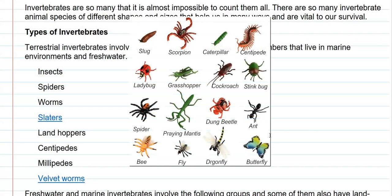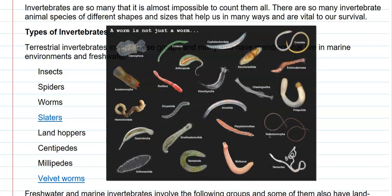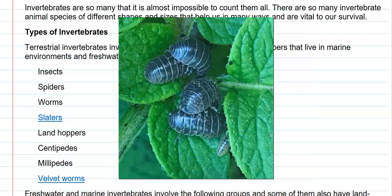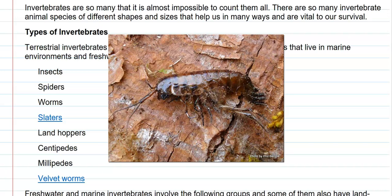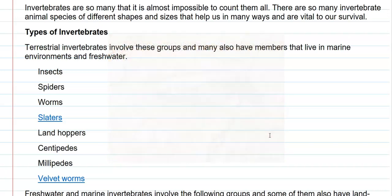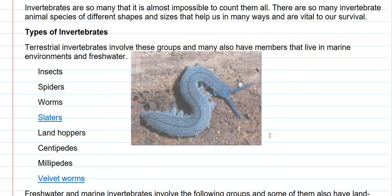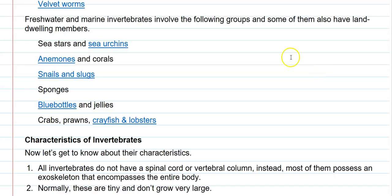Terrestrial invertebrates include spiders, various insects, worms, slaters, land hoppers, centipedes, millipedes, and velvet worms. Next comes the list of freshwater and marine invertebrates. Sometimes this group of organisms also includes land-dwelling members, meaning they can be present on land as well.